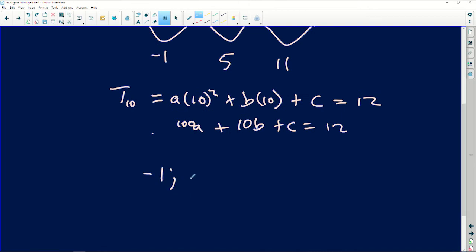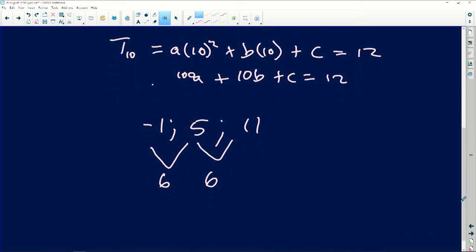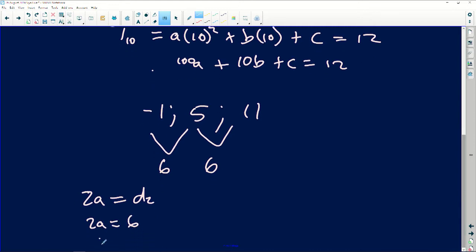-1, 5, and 11, the constant difference here will be 6 and there will be 6. Now remember how I find the value of a? I normally find it by saying 2a is equals to the second difference. Therefore I'll say 2a is equals to 6, and then from there I will have my a as equals to 3. That's number one.